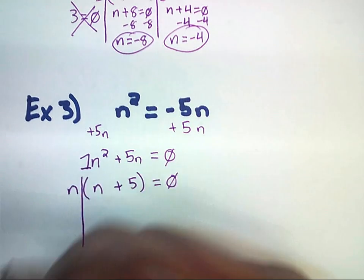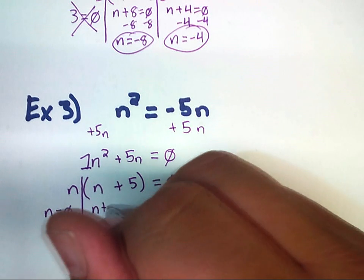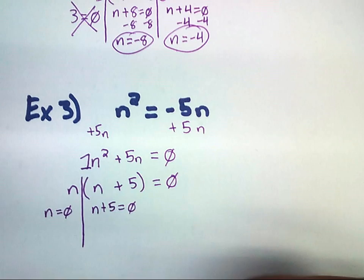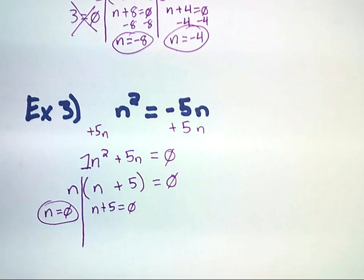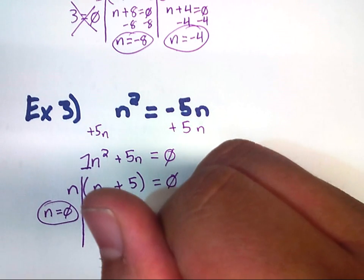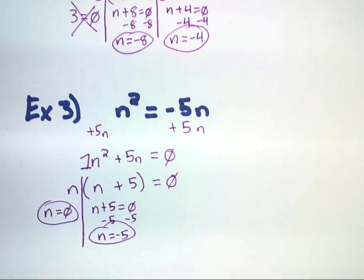And what we do here is the same thing we were doing before. We've already factored this as much as we can, so we're going to set both sides equal to 0. The only difference is we have a monomial, which is easier to solve, versus a binomial. We already have, right away, one of the factors, or roots, I should say, which is n equals 0. And over here, we're going to subtract 5, and this will give us the second root of n equals negative 5.